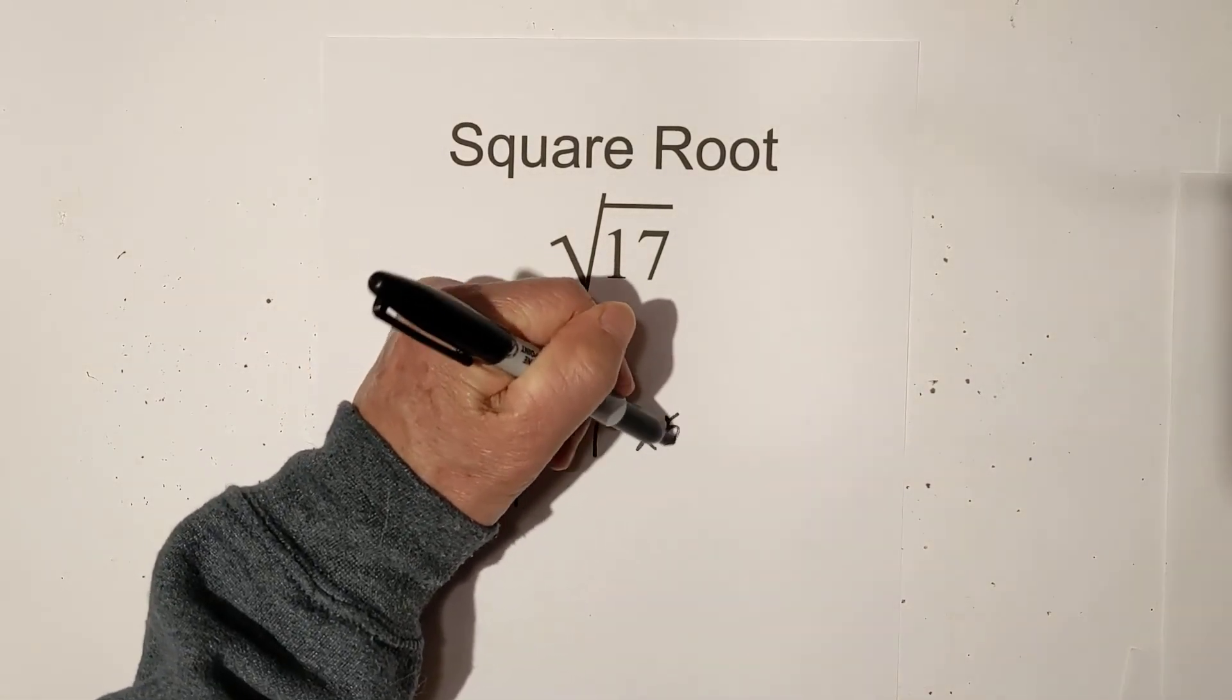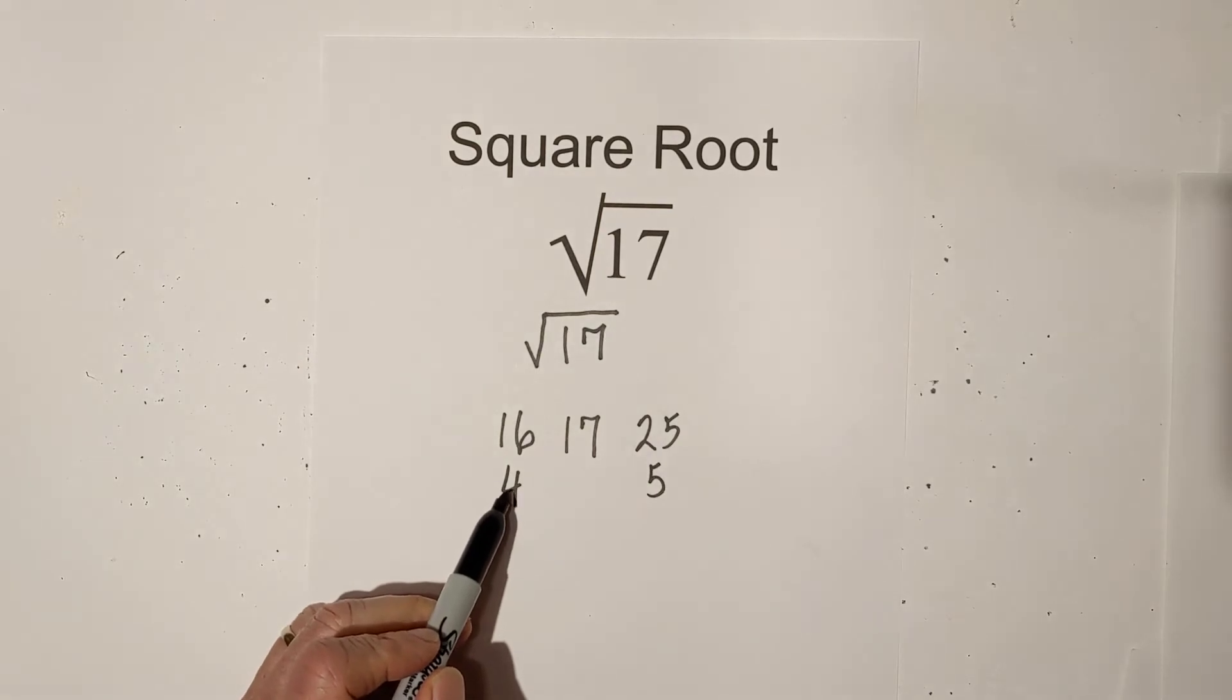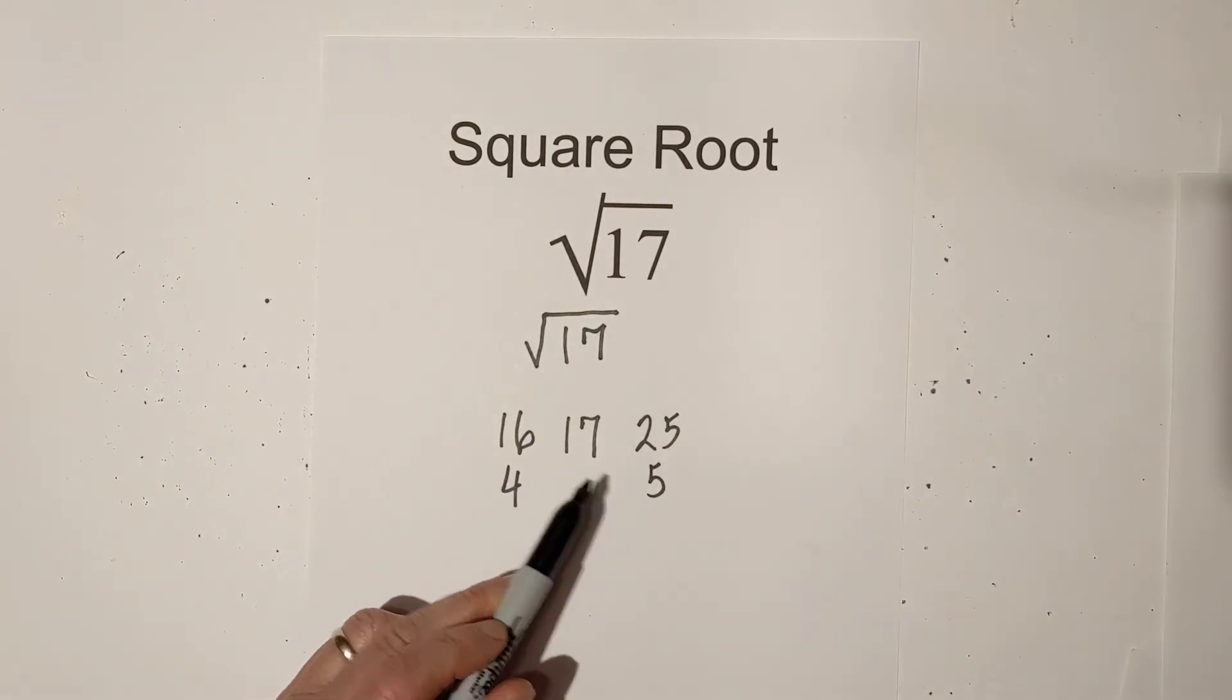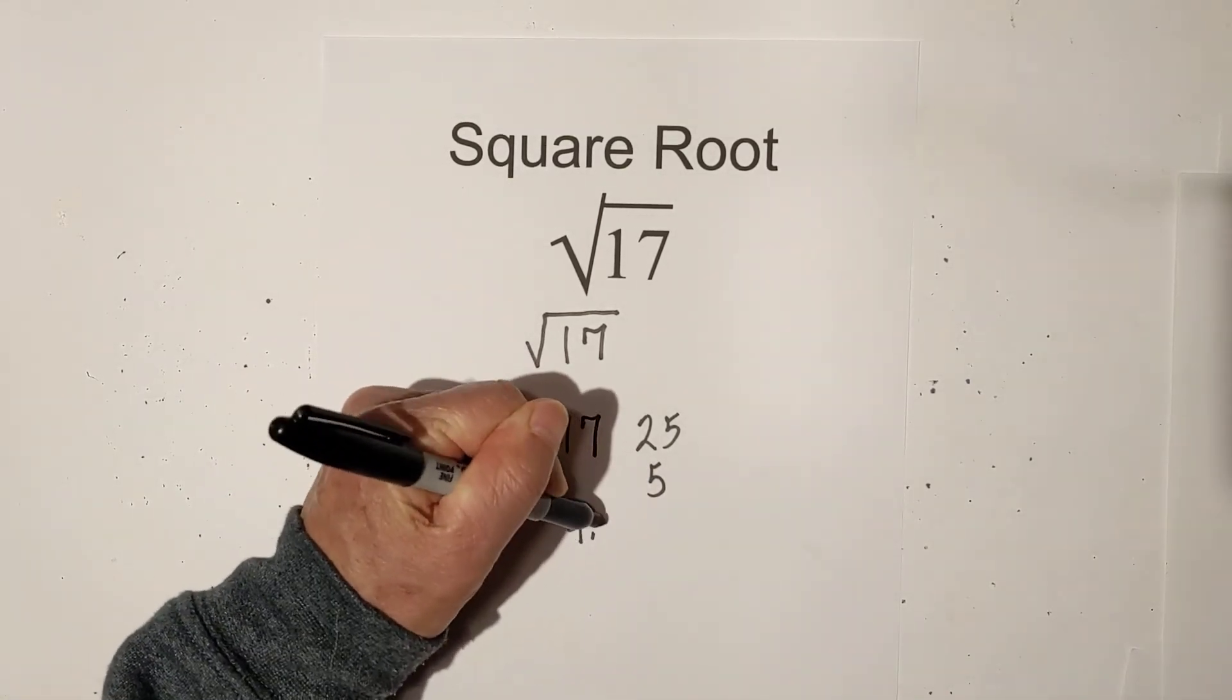and then you have 25 above it, which is the square root of 5. So you know it's going to be somewhere between 4 and 5, and it's much closer to 16 than 25. So you could estimate it to be about 4.1.